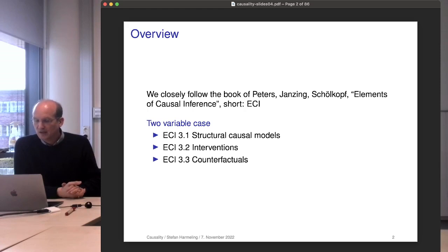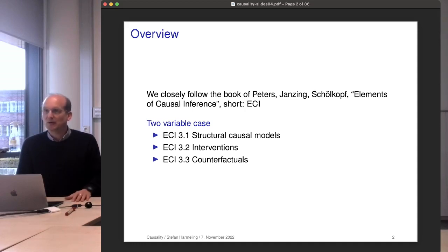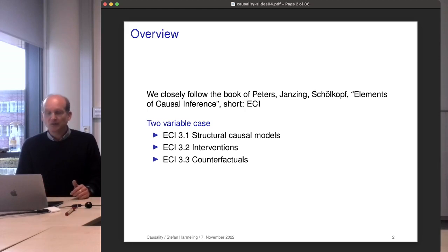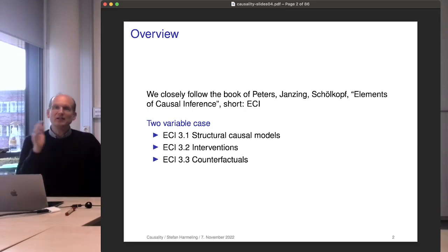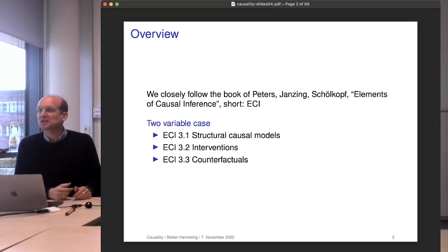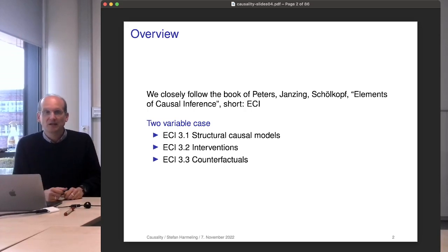The book has a very nice structure. They start with causal models in the simplest case — two variables, one cause and one effect. On this simple starting point, they explain the structural causal model, what interventions are (which go beyond statistics and probability theory), and what counterfactuals are. Once we understand these things for two variables, we can easily generalize to the multivariate setting with a large directed acyclic graph, like a large Bayesian network interpreted causally. We will introduce that in about two weeks.